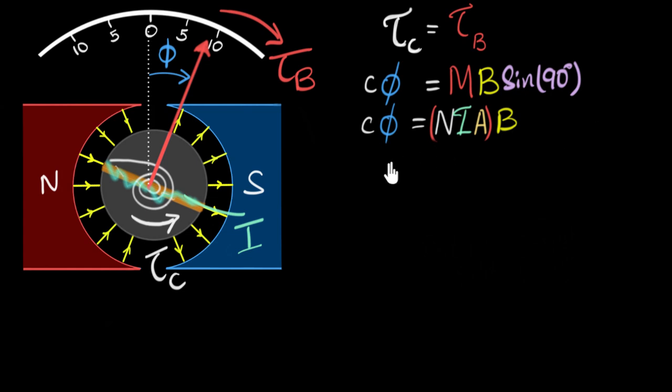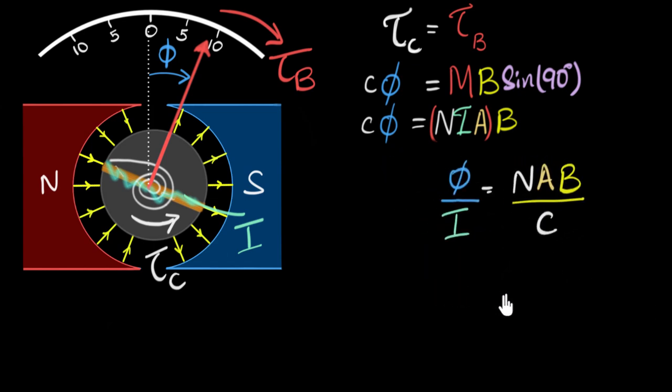But now let's rearrange this equation to give us φ, the deflection, divided by the current, I. If I rearrange this, we will end up with, on the right-hand side, we'll have this NAB divided by C, the spring constant. And now this term is what we call the current sensitivity of a galvanometer. Let's see why and let's see what it means.